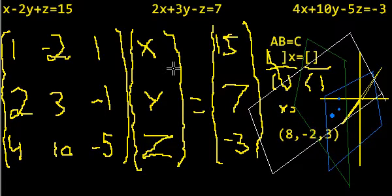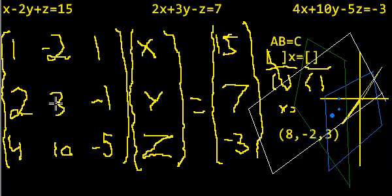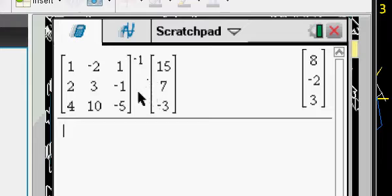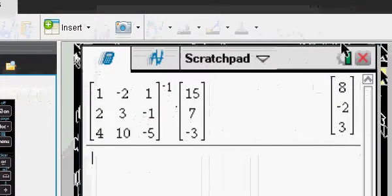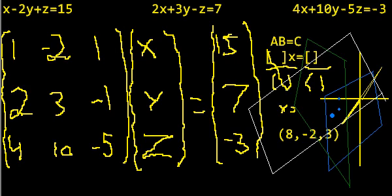I'll do another one — I don't know if this one was that good. But you just take the coefficients and build one matrix, take the constants and build another, take the variables and build one. If it was 2 by 2, you'd have x and y for two equations, get the inverse of the coefficient matrix and multiply it times the constants. Remember: matrix multiplication is not commutative — you can't do a 3 by 1 times a 3 by 3, it has to be entered in the correct order. I'll do another video that's better.